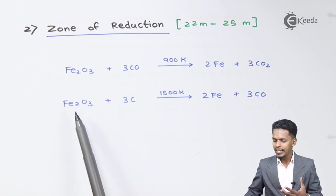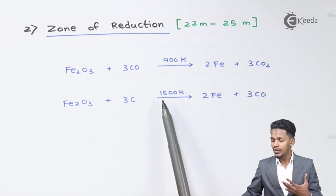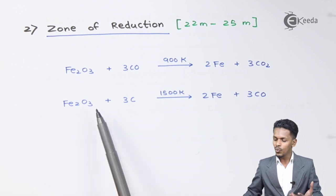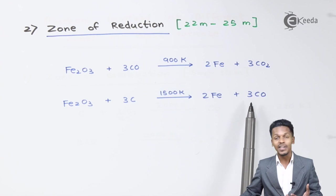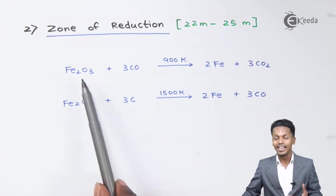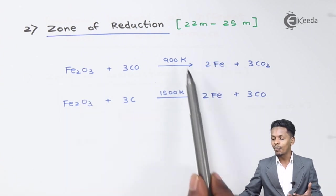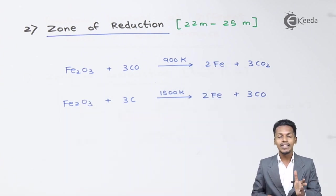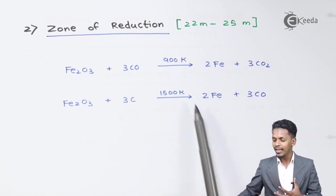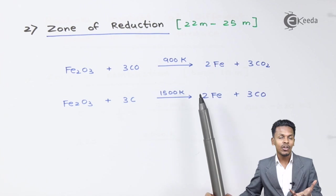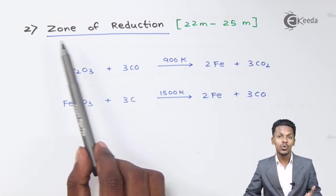When only a small amount of ore remains, Fe2O3 reacts with carbon at a temperature of 1500 Kelvin, converting Fe2O3 to Fe while releasing carbon monoxide. This carbon monoxide further reacts with remaining Fe2O3. This is how we obtain Fe — the crude iron — in the zone of reduction.